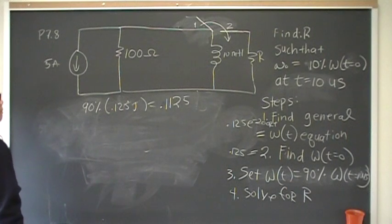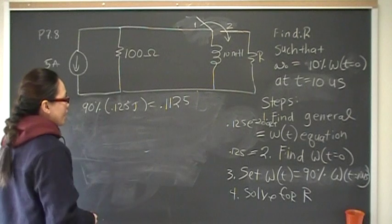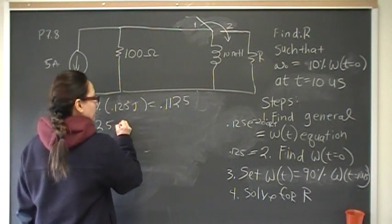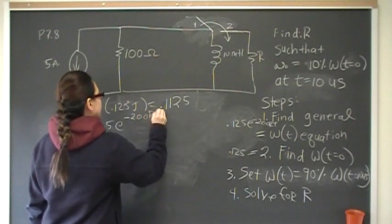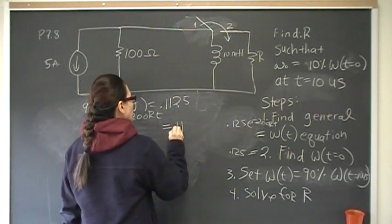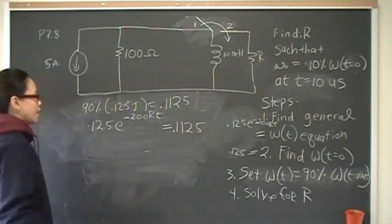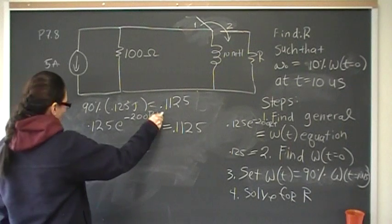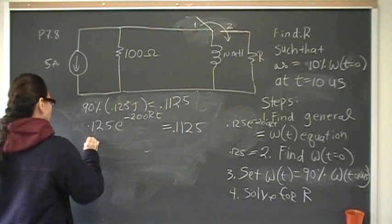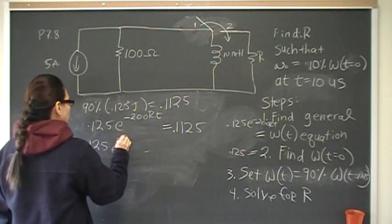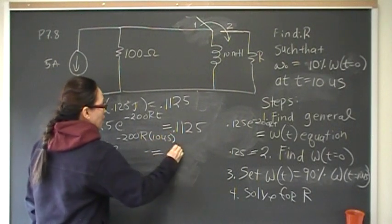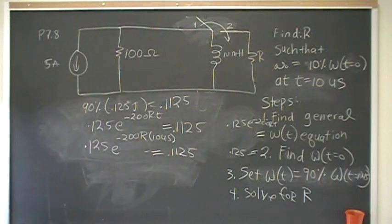So now we know that this is how much energy we want still remaining at 10 microseconds, and we have the general equation. The general equation is 0.125 e to the negative 200 rt, and now we can set that equal to what is remaining. Well, what is remaining is 0.125 joules. Okay, and we want to find R, and we know, and we want to find it at omega of t is equal to 10 microseconds. So we set t as equal to 10 microseconds, so our equation becomes 0.125 e to the minus 200 r times 10 microseconds. Set that equal to what we want is still remaining, and now it's just a problem of solving for R.